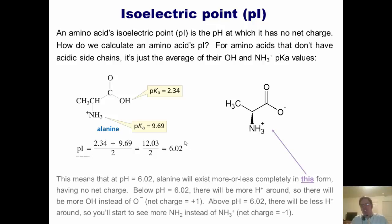So what in the world does that mean? Simply put, it means that at pH 6.02, alanine will exist more or less completely in this form right here, having no net charge. Below pH 6.02, you might remember, there's more and more H+ around, which means that we're going to protonate this O- to some degree. If you protonate this O-, you get rid of the minus charge.